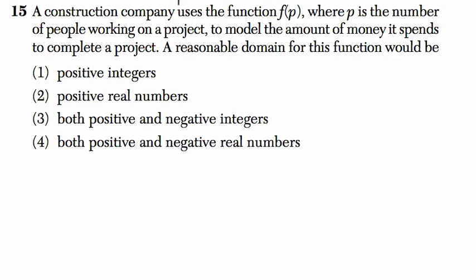A construction company uses the function f of p - not f times p, but a function based on the input p. They're saying p is the number of people working on the project, and they're modeling the amount of money spent to complete the project. This function is based on the amount of people we have, and the result gives us some kind of cost.